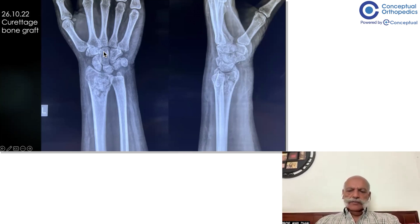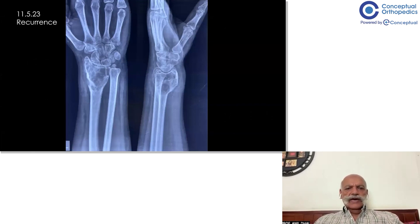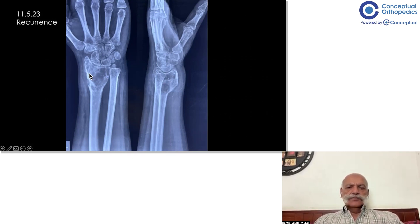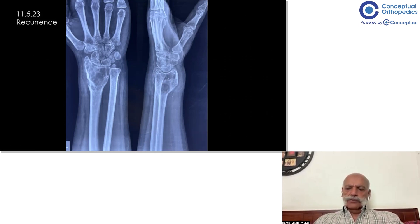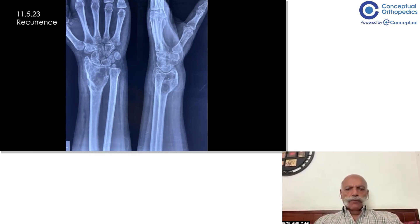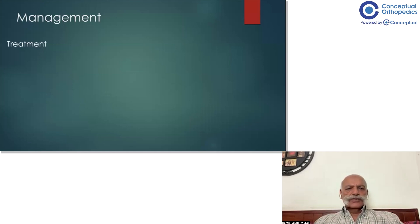This is the post-operative X-ray, but when she came to us again with a complaint that the swelling had started growing, she had this X-ray. It is quite obvious that there is a recurrence of the tumor, because the radiolucency has not only returned but there is now an expansile swelling of the distal radius. Both the transverse and anteroposterior dimensions of the distal radius are increased — it appears ballooned out. This is what we call an expansile lesion, and you can see the septate appearance, also known as the soap bubble appearance.